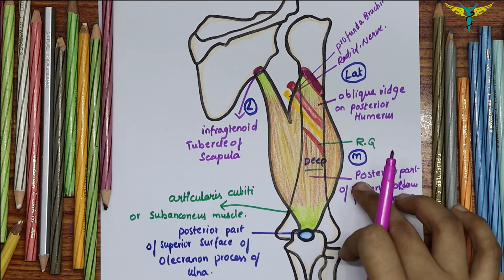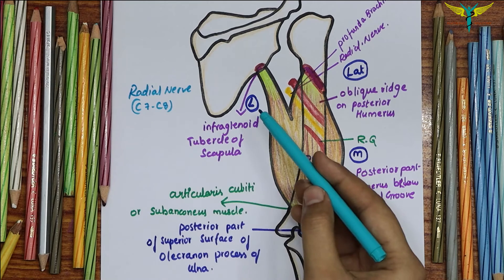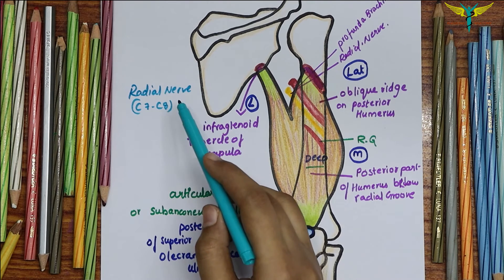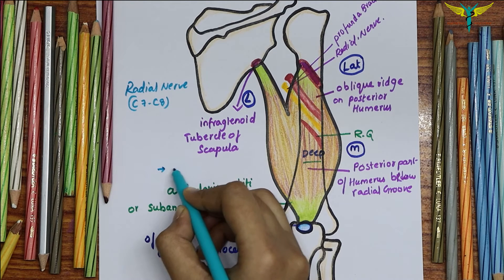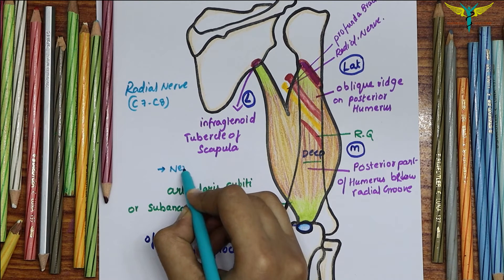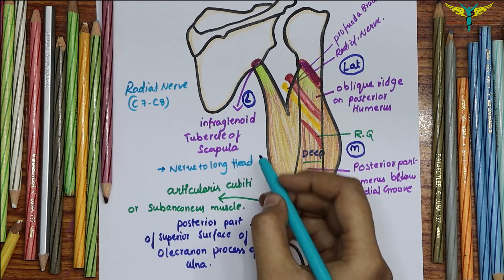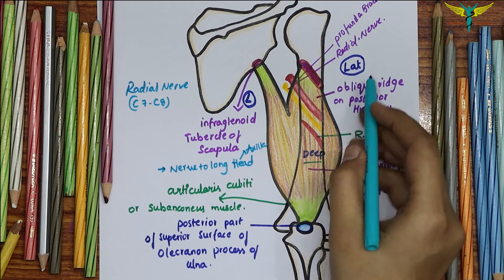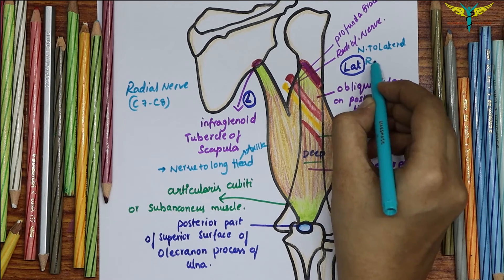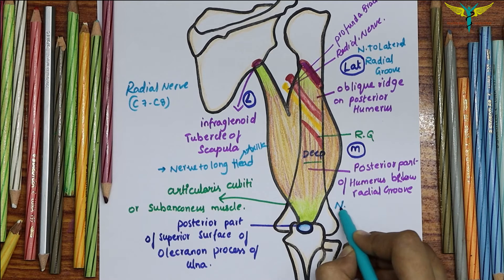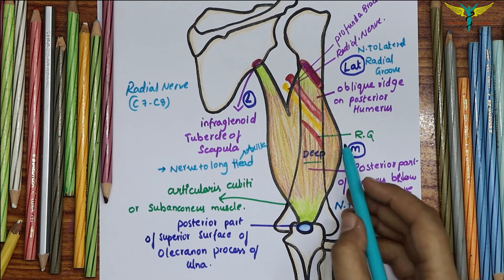The nerve supply of the triceps brachii is by the radial nerve, and each head receives a separate branch. For the long head, the nerve to the long head of the triceps arises in the axilla. For the lateral head, the nerve to the lateral head arises in the radial groove. For the medial head, the nerve to the medial head also arises in the radial groove.